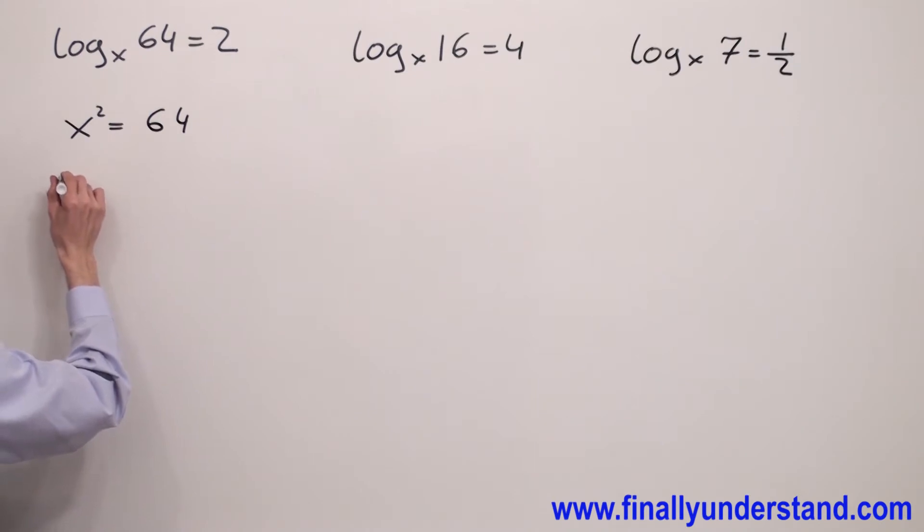I can say that this is x equals plus or minus square root of 8 to the second power. Square root and the exponent will cancel out and I have x equals plus or minus 8.